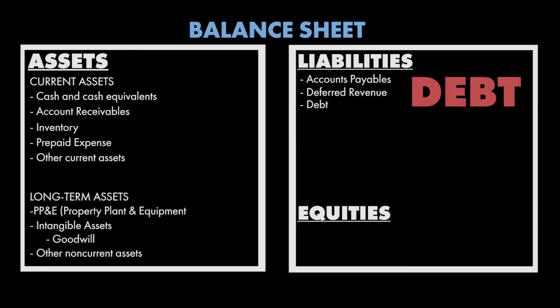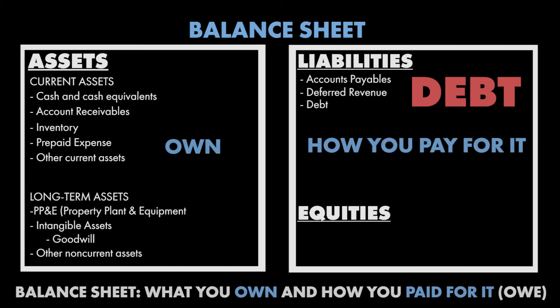Remember, the balance sheet tells you what you own and how you paid for that. A lot of ways that companies pay for things is by actually getting loans and then using that to buy inventory or buildings or things like that.